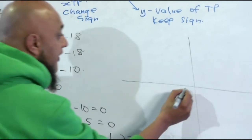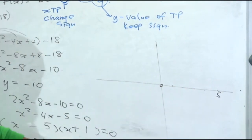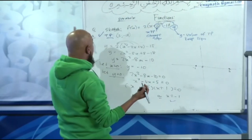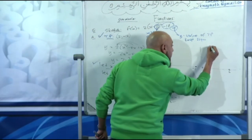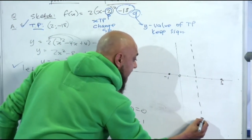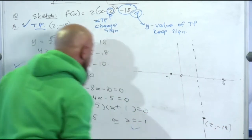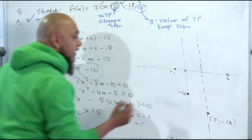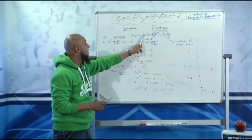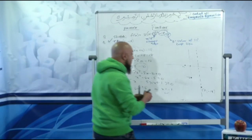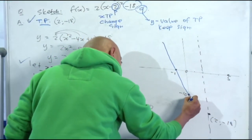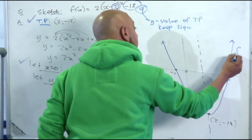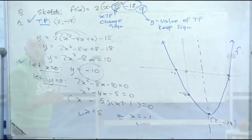Now let's sketch the graph. Plot x = 5 and x = −1 on the x-axis. The turning point is at (2, −18) — draw a dotted line through it. The y-intercept is at −10. The coefficient of x² is positive, so it's a smiling face (concave up). Draw the curve through the x-intercepts, down through the y-intercept, to the turning point, then back up to infinity.